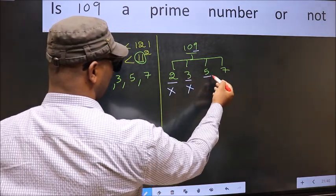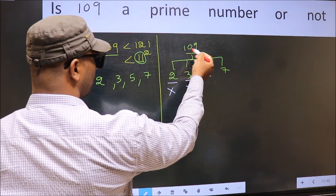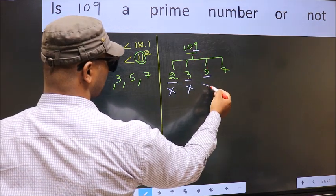Next number 5. Last digit is neither 0 nor 5. So this is not divisible by 5.